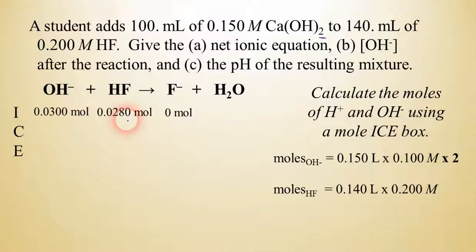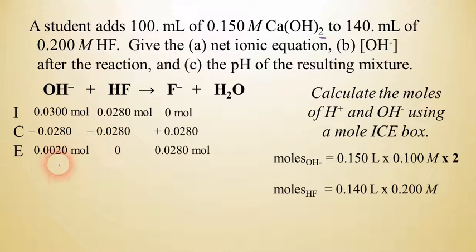If we look at the initial mole values, hopefully we can see that there's less hydrofluoric acid. So that is the limiting reactant. So we're going to subtract 0.0280 from both sides, or from the left side rather, from both values. And the fluoride is going to go up by 0.028 moles. That means that our HF is completely gone. And we have 0.002 moles of hydroxide and 0.0280 moles of fluoride.